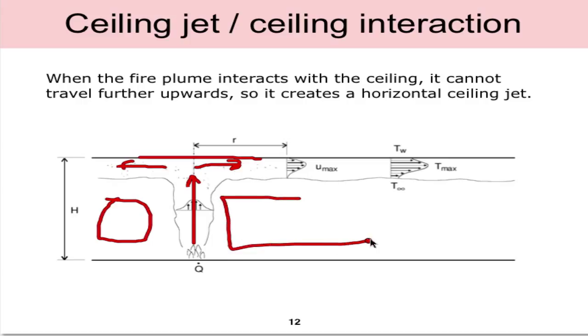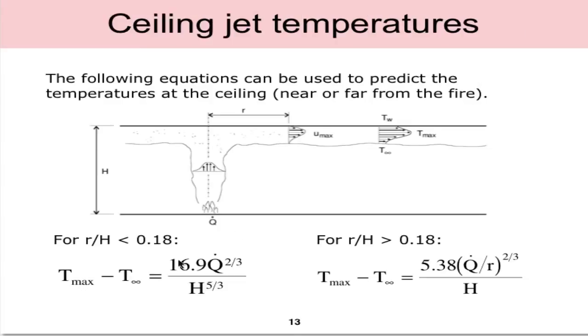There are some equations from the textbook that can be used to predict the temperatures at the ceiling either near in the near field of the fire or some radial distance r from the fire. These two equations are given for different conditions.